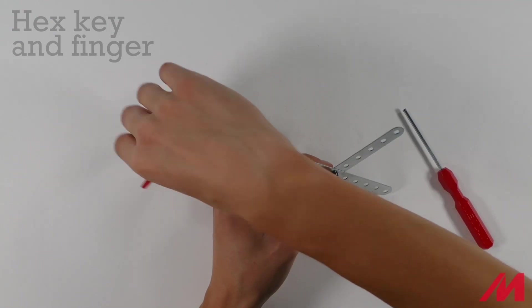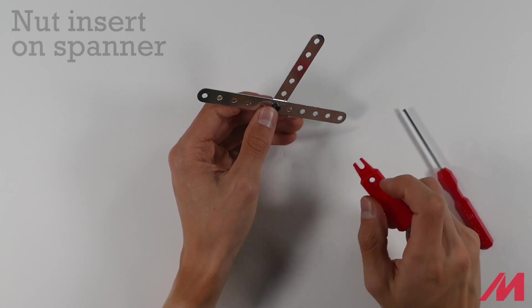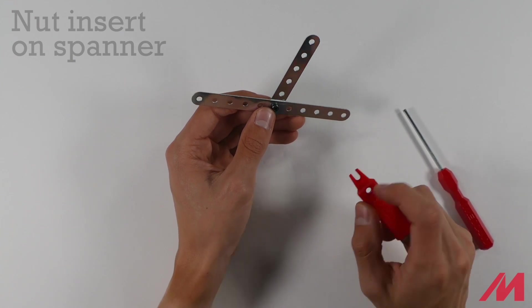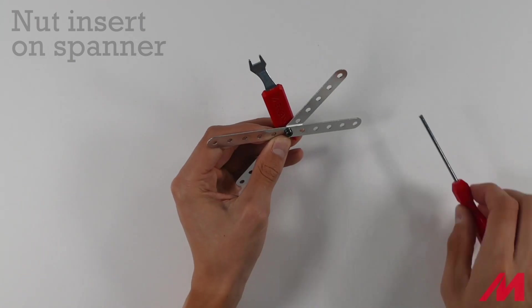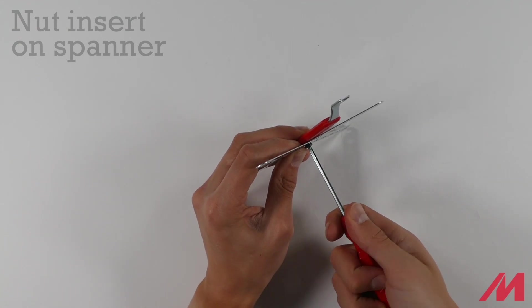So there are a few ways to apply tension. Either you can use the insert here if you have enough space. Simply put it over the nut and turn right. Because righty tighty.